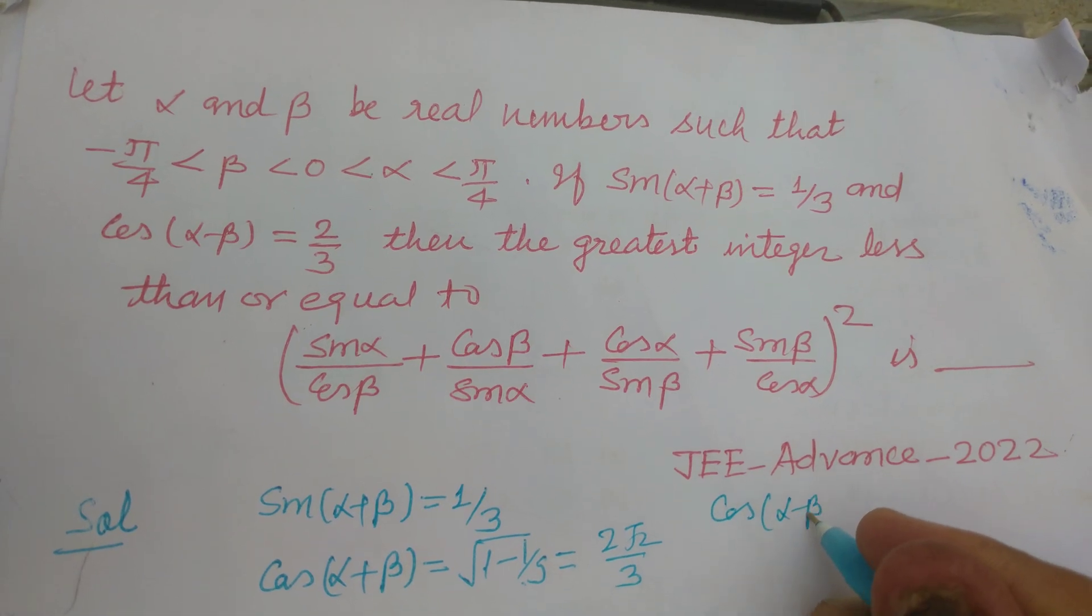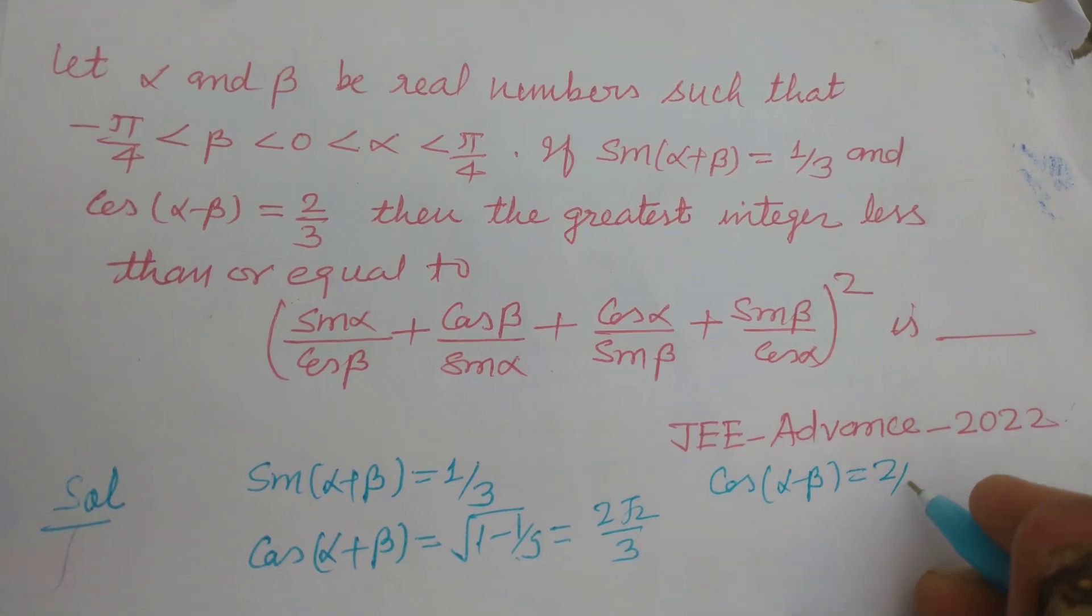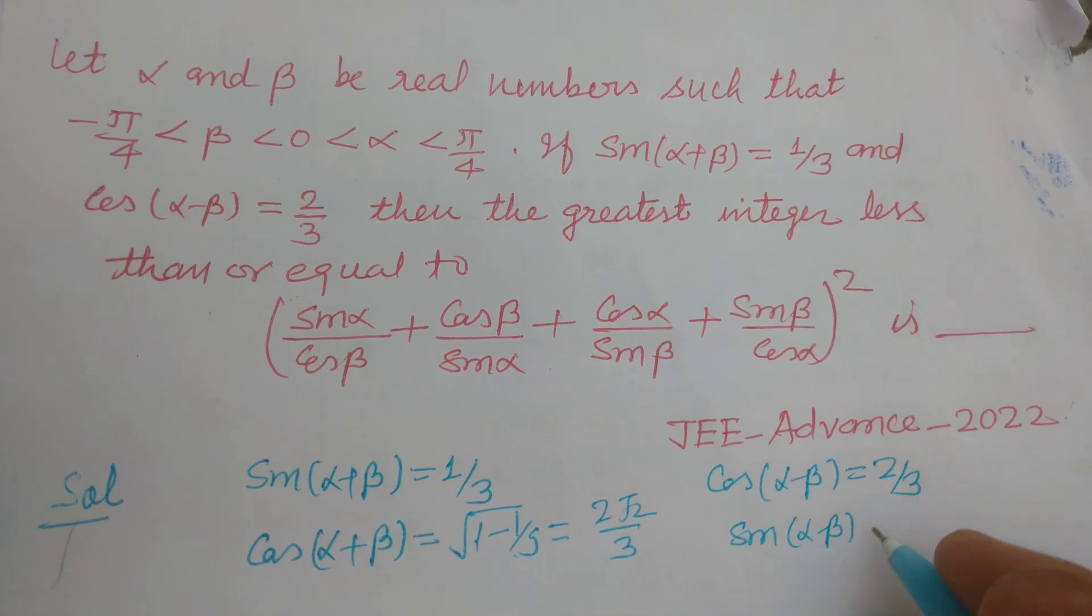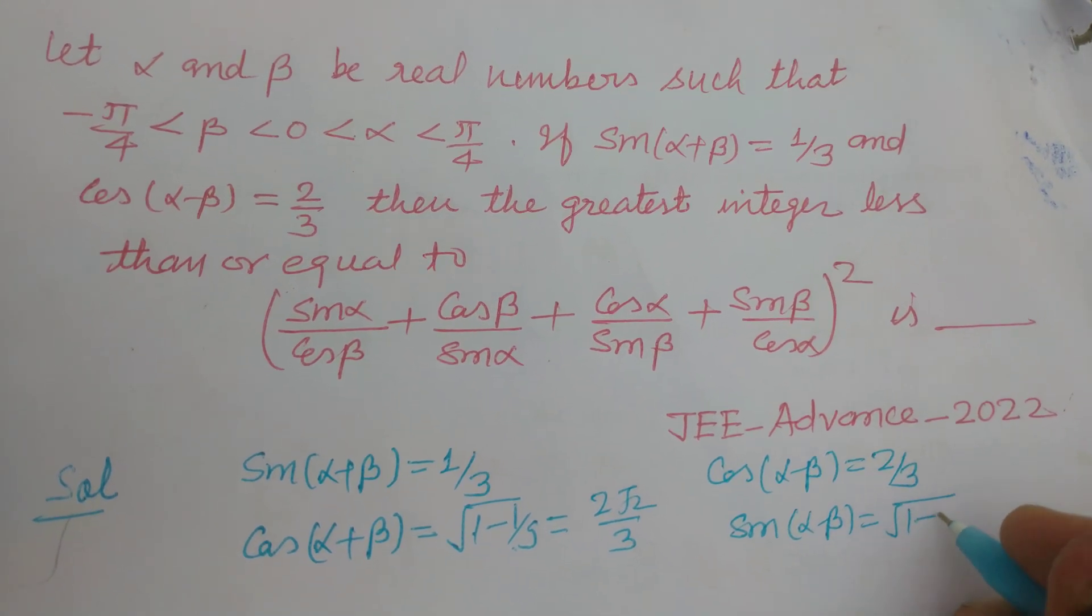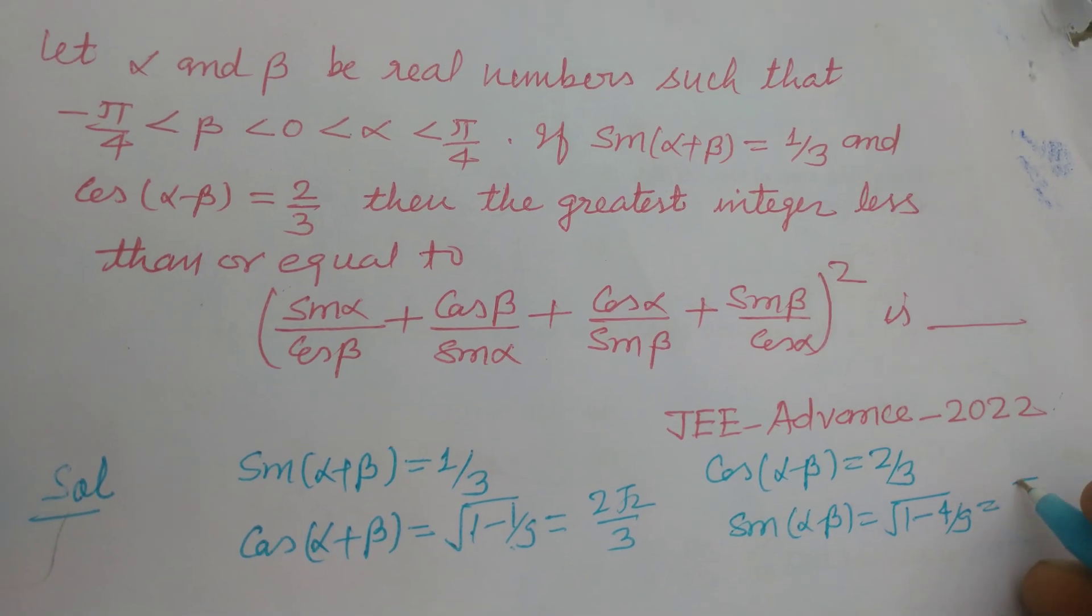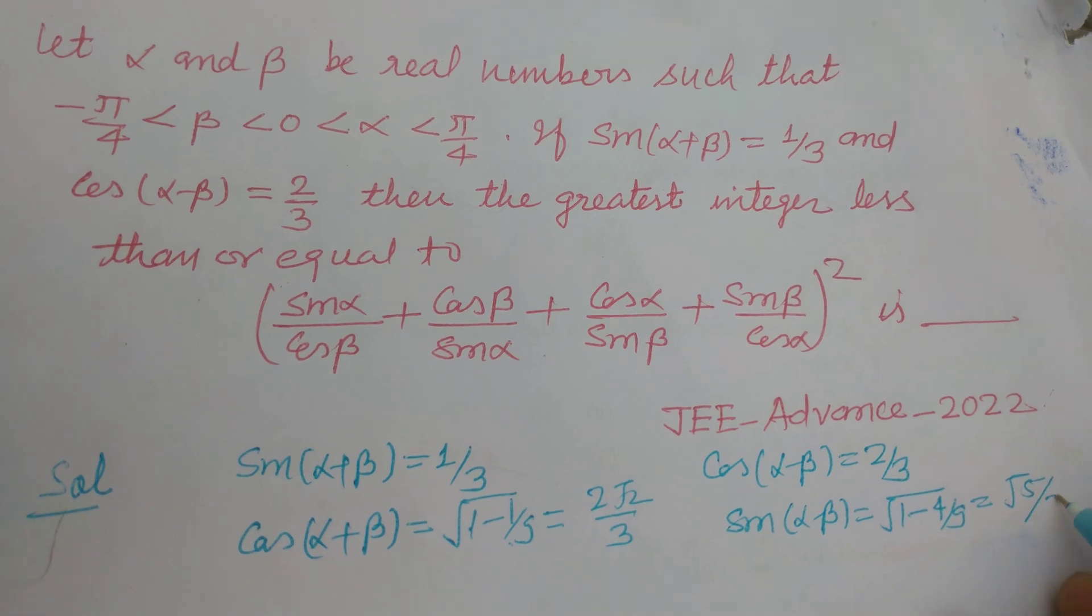cos(α-β) equals 2/3, therefore sin(α-β) equals square root of 1 minus 4/9, or this is √5/3.